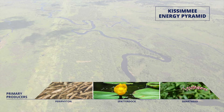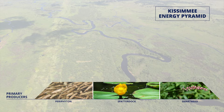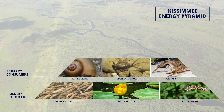Plants use energy from the sun to produce their own food through the process of photosynthesis — plants are primary producers. In the Kissimmee River food web, the primary producers are wetland plants such as periphyton algae, spatterdock, and smartweed. These plants are eaten by primary consumers: small fish and aquatic invertebrates such as apple snails, mayfly larvae, and crayfish.